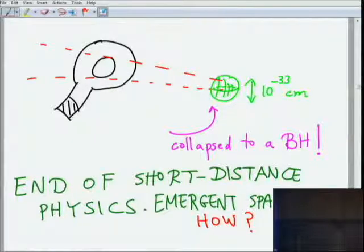But there doesn't seem to be any obstruction just from this argument. Just relativity and quantum mechanics by themselves don't give you an obstruction to go into arbitrarily short distances. But gravity, relativity and quantum mechanics do give such an obstruction.